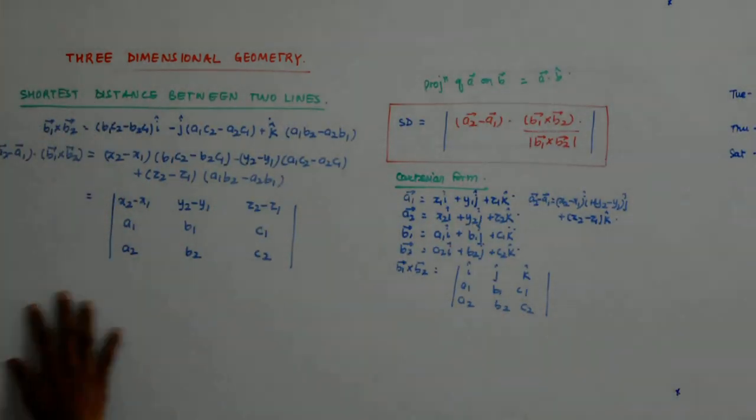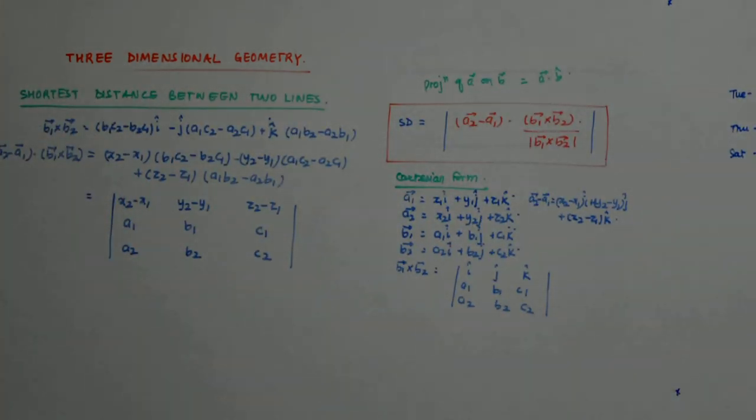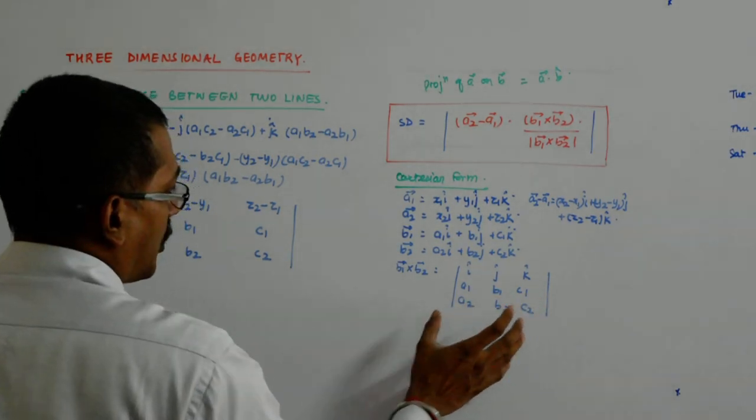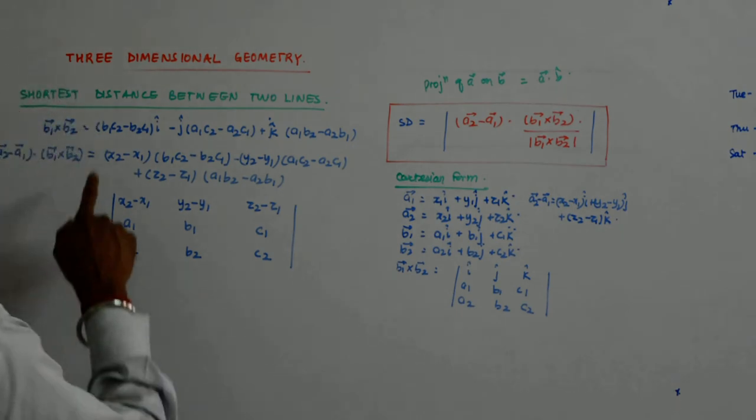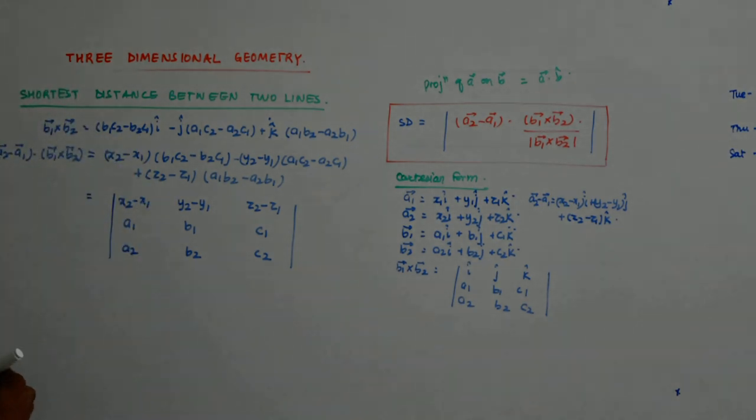So I get this as the vector and it gets divided by mod of b1 cross b2. Do you understand?